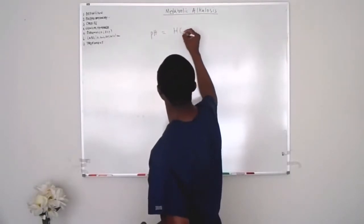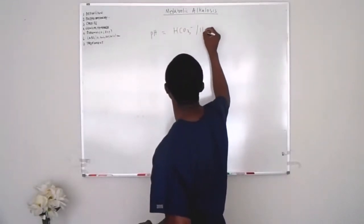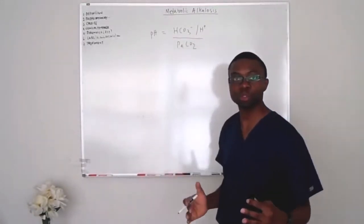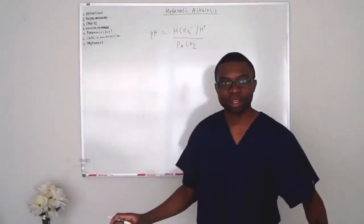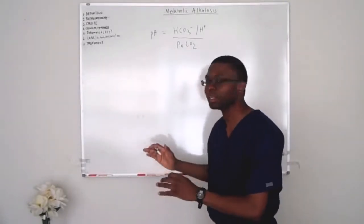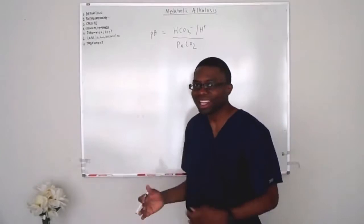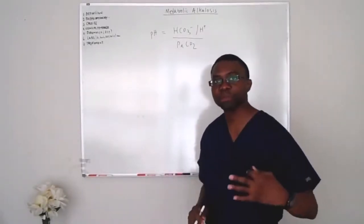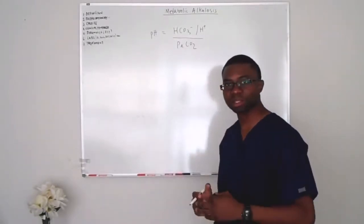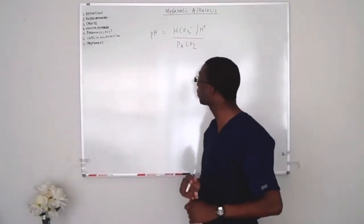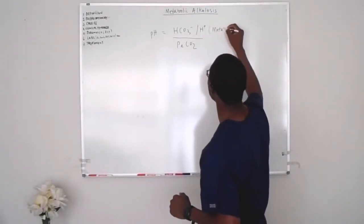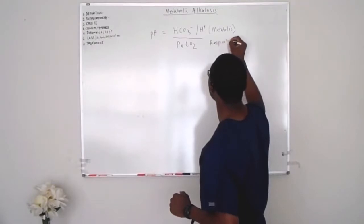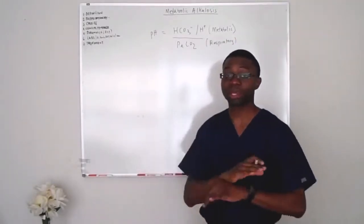Our favorite formula — and I always told you guys, if you know this, this is the end from the beginning. This is the cheat formula; that's all you've got to memorize and you're always going to look like a star. We always say: always write metabolic on top and respiratory at the bottom. Extremely important — that is gold.